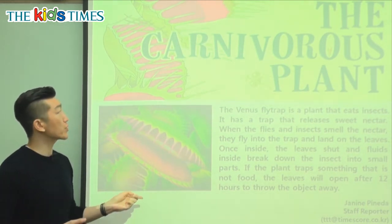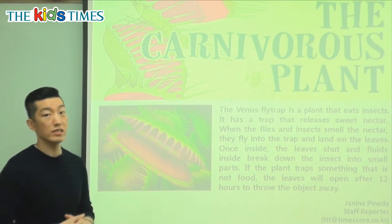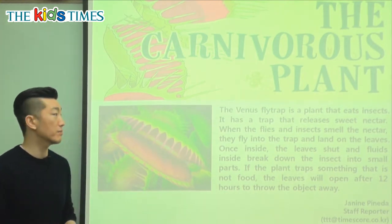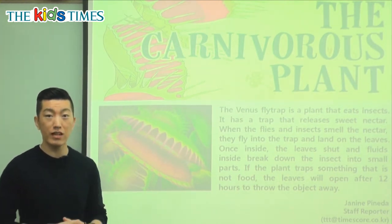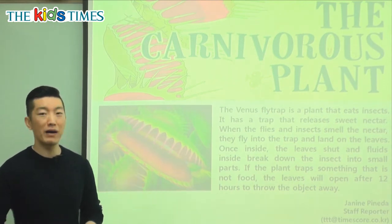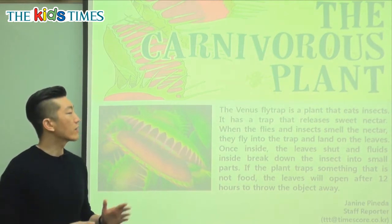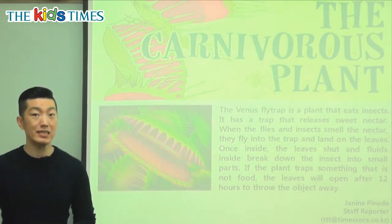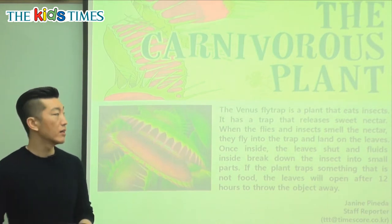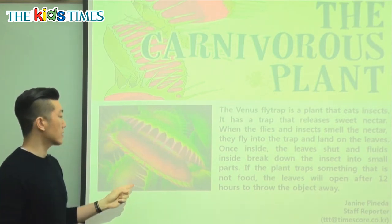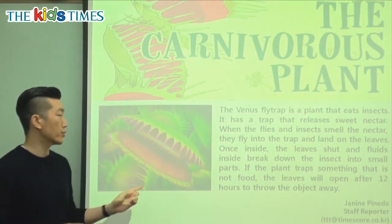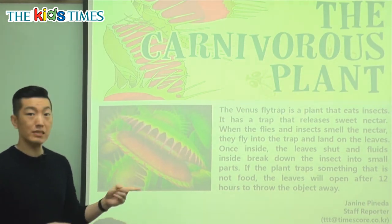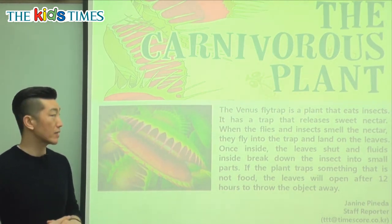If you look at this picture, this is what it is. Some of you may have seen it; some of you may be seeing this scary looking plant for the first time. Let's find out more about it. The Venus flytrap is a plant that eats insects — this flower actually eats bugs.